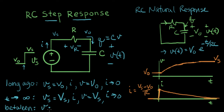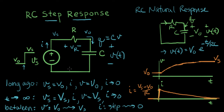So V will go from V naught and will eventually become Vs, and I will have a step and then go back to zero. That's our intuitive understanding of how the step response will look for a driven RC circuit. Next we'll work this out in detail and get mathematically accurate versions of what these two curves look like.